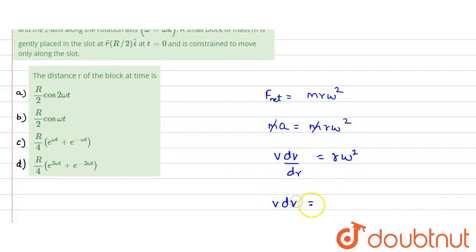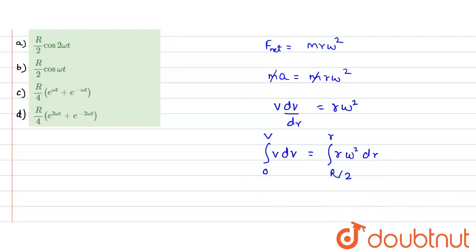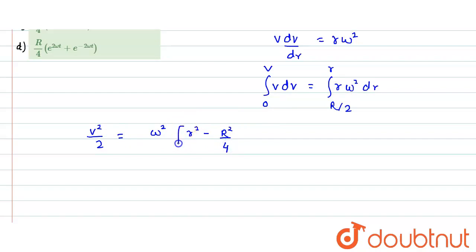We placed the particle at radial location R/2 at t = 0, and at some distance r the velocity is v. Initially the velocity is zero. Integrating both sides: the left side gives v²/2, and the right side gives ω² times r²/2. Putting in the limits from R/2 to r, we get v²/2 = ω²(r² − R²/4), so v = ω√(r² − R²/4).